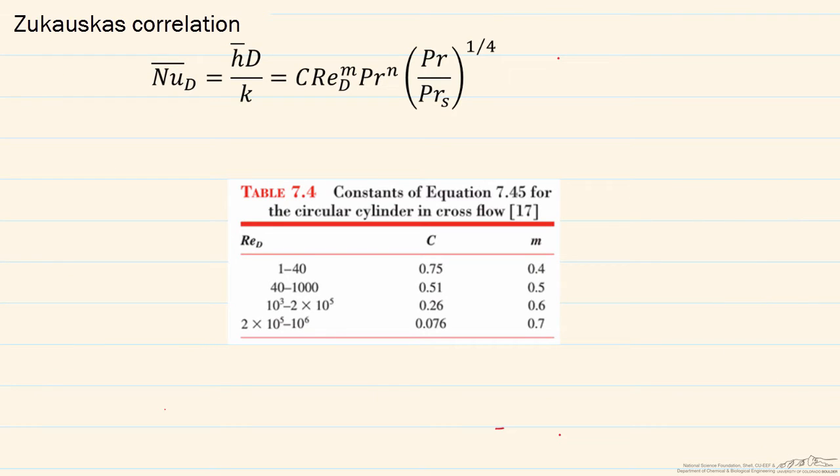The next correlation, which is known as the Zukauskas correlation, is slightly more complicated, but again has two constants, C and M, that are based on the Reynolds number, and a third constant, that N, and that N is based on the Prandtl number.